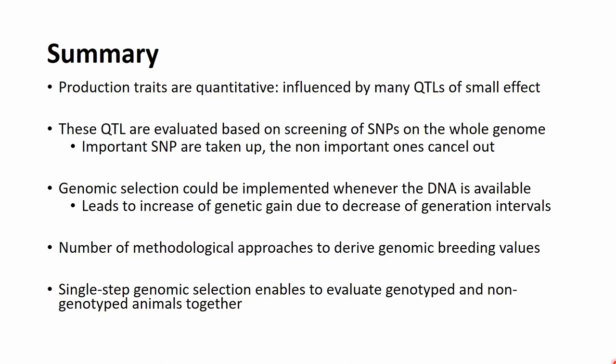Genomic selection leads to an increase in genetic gain due to a decrease in generation intervals. There are a number of approaches to derive genomic breeding values, most importantly the so-called GBLUP and a range of Bayesian methods. There is also single-step genomic selection, which enables evaluation of both genotyped and non-genotyped animals together by merging relationship matrices from pedigree and genotypes, enabling genomic selection across the entirety of the population.